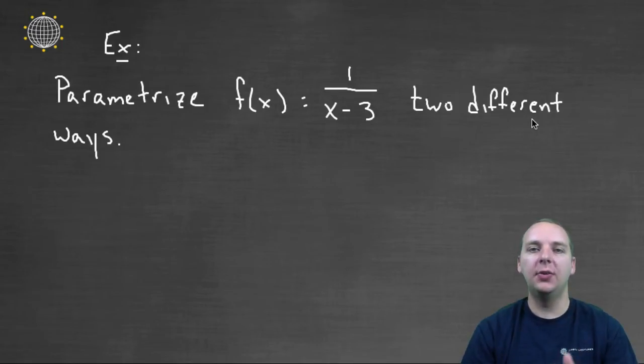Here's an example where we're being asked to parametrize a function two different ways. And so the first way I know is automatic.